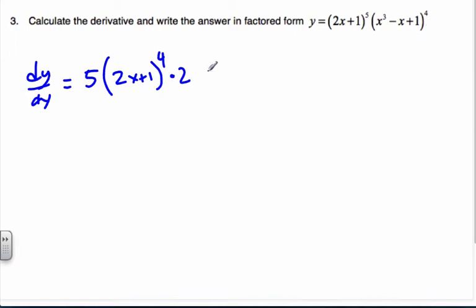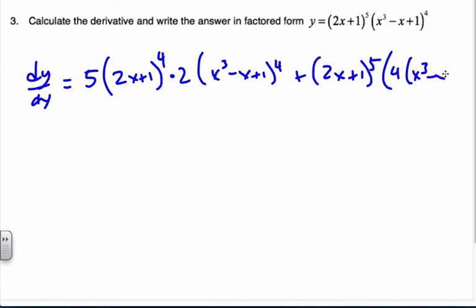Times the function (x³ - x + 1)^4, plus my first function (2x + 1)^5, times the derivative of this, which is 4 times (x³ - x + 1)^3, times the derivative of the inside, which is 3x² - 1. Wow. Now there's a lot of things here, and I have to put it in factored form.